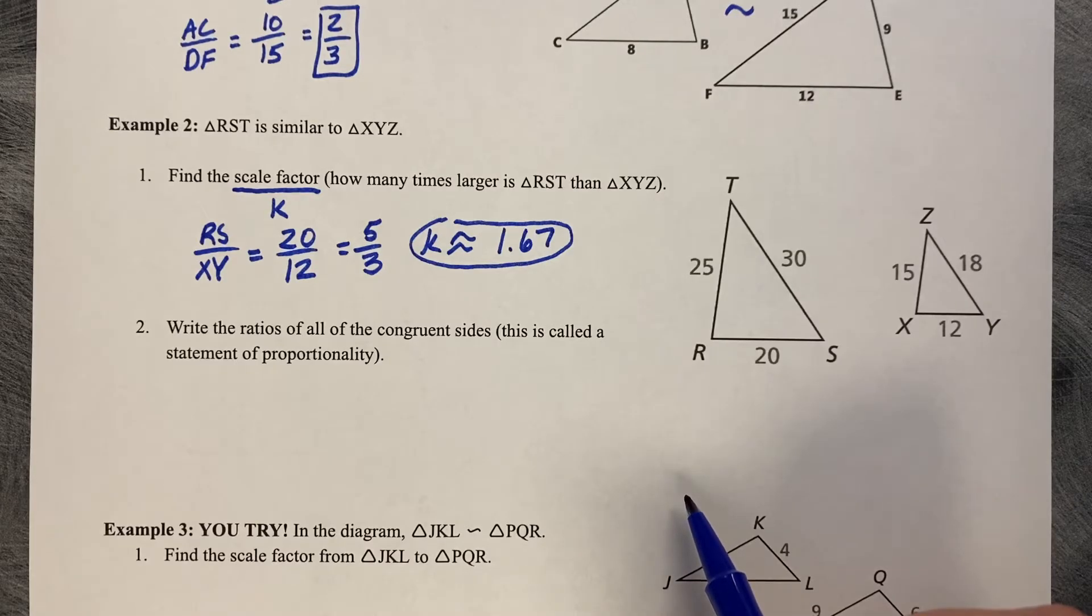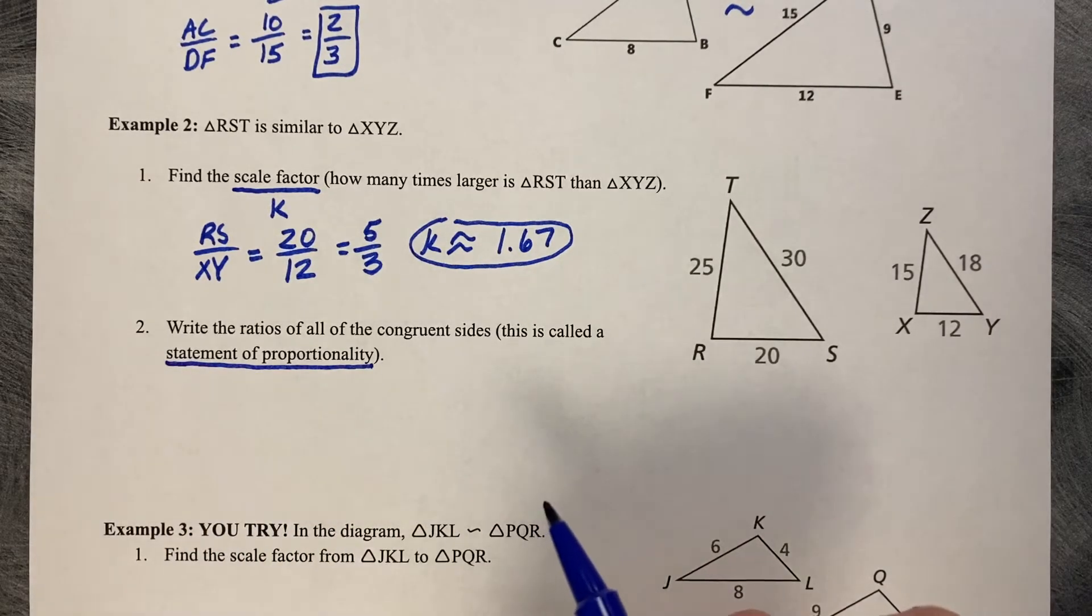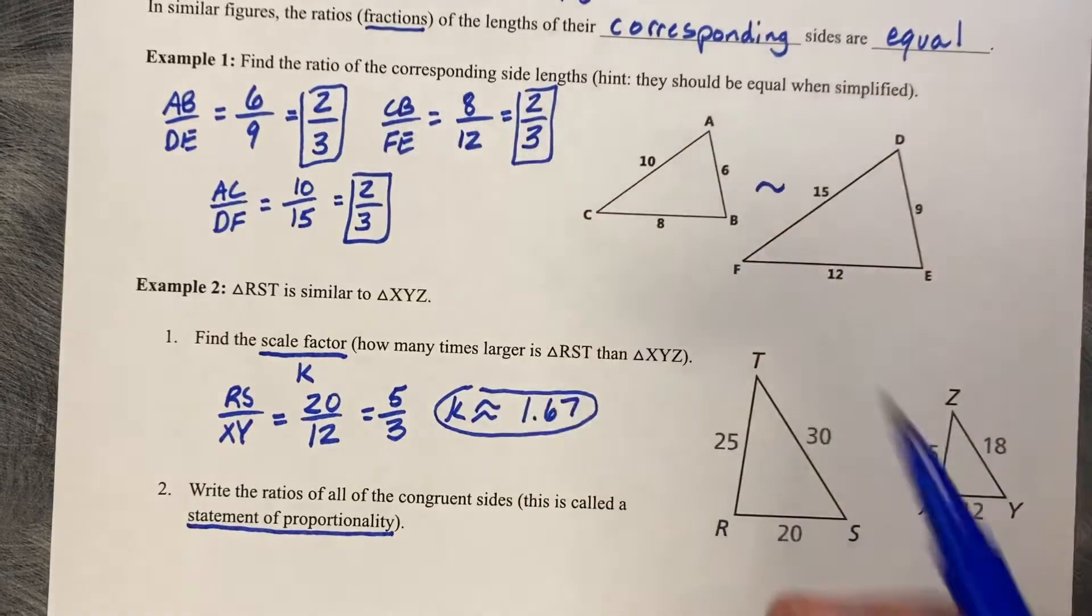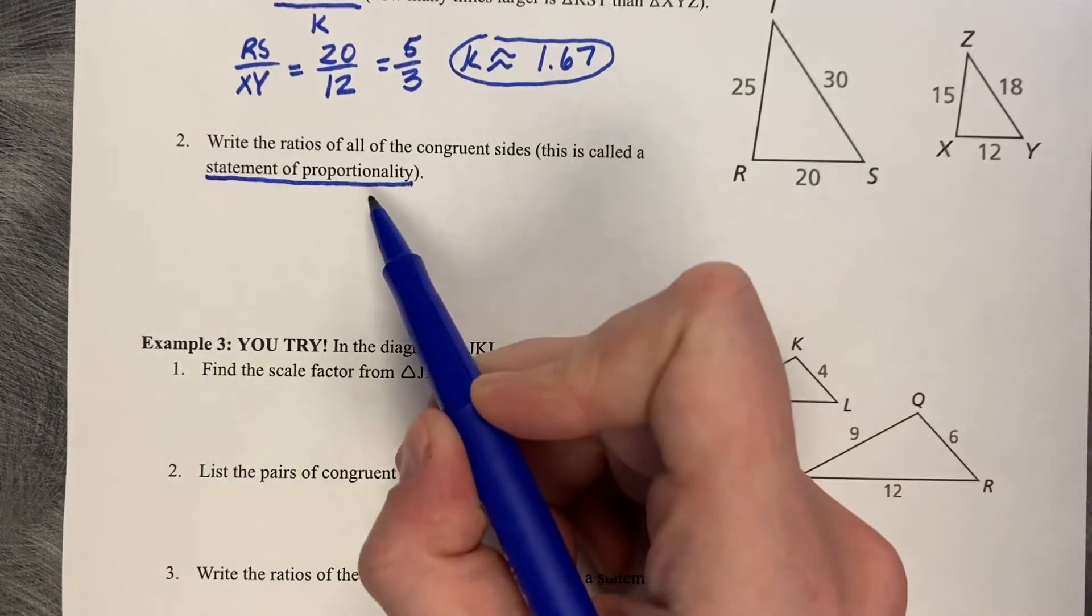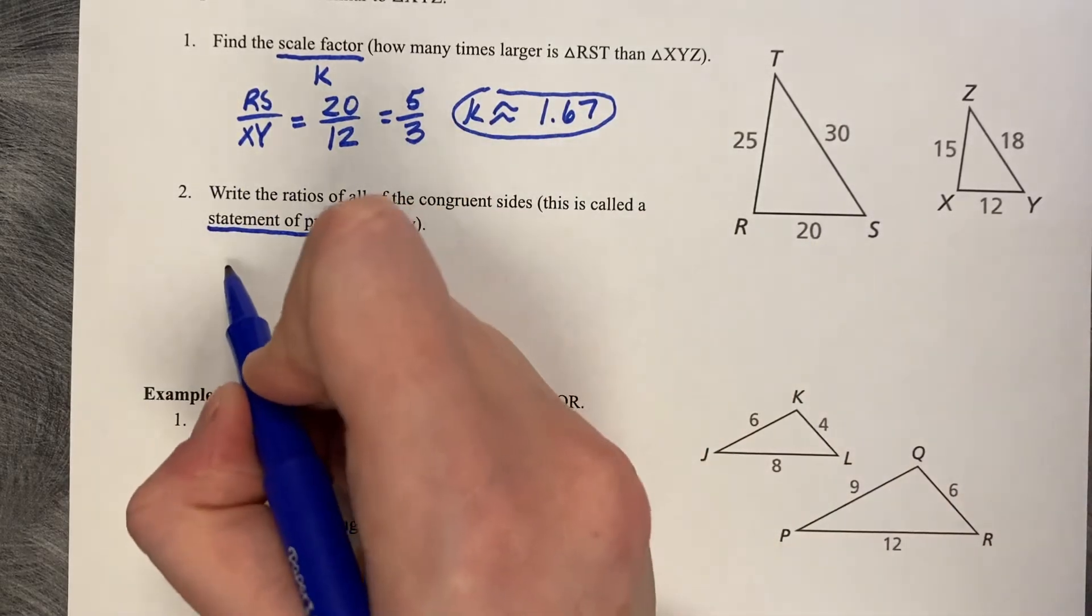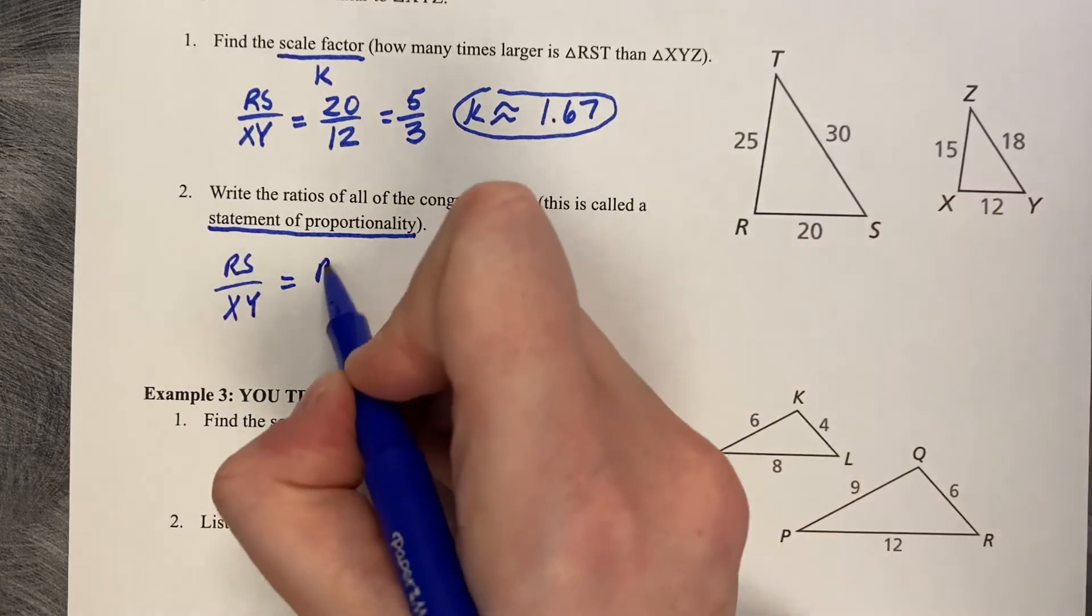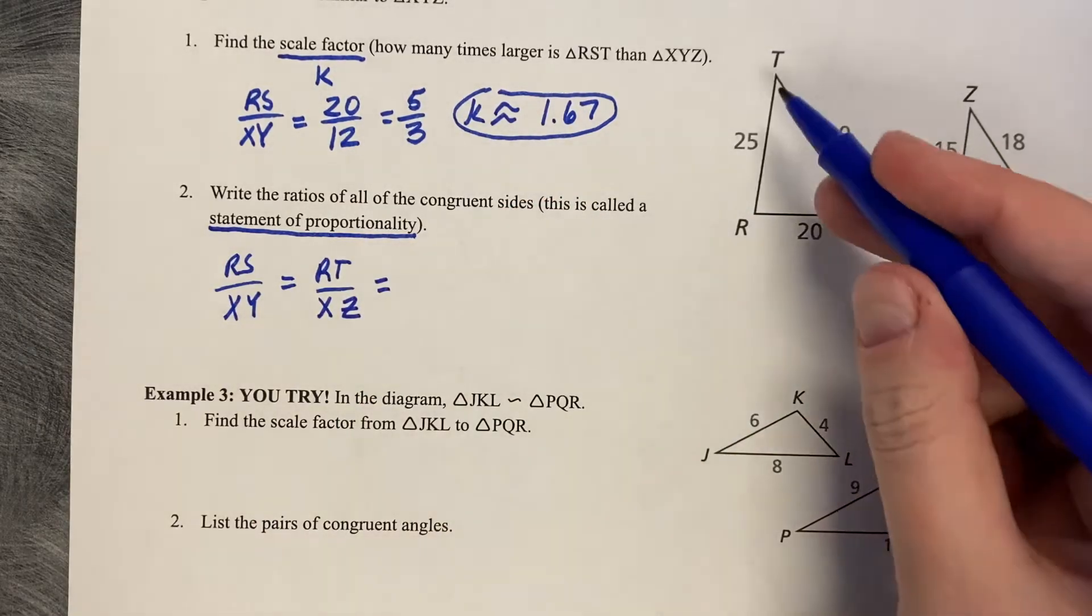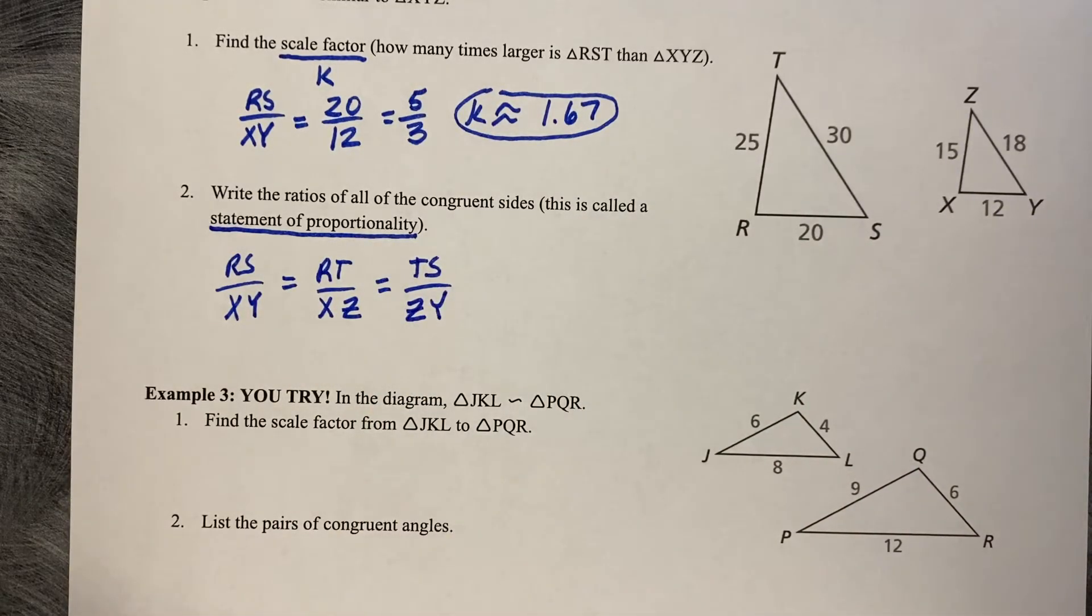Number two, write the ratios of all the congruent sides. This is called a statement of proportionality. Because what's happening is that all the side lengths become what's called proportional. So if your scale factor is equal for all three sides, then you've got proportionate side lengths. So all you need to do is just match up corresponding side lengths. So let's start with RS and XY. That proportion is equal to RT and XZ. Those are corresponding side lengths. And then TS corresponds to ZY. That's what's called a statement of proportionality.